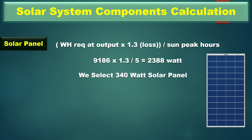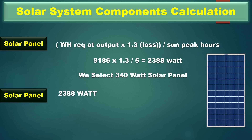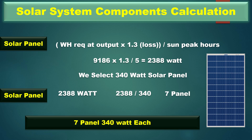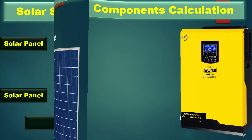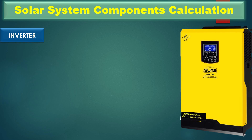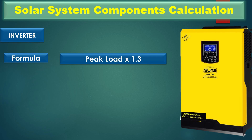We have different solar panels available in the market, so we select a 340-watt solar panel. Total solar watts divided by 340 watts: 2388 divided by 340 gives approximately 7. So the total number of solar panels is 7, each rated at 340 watts.